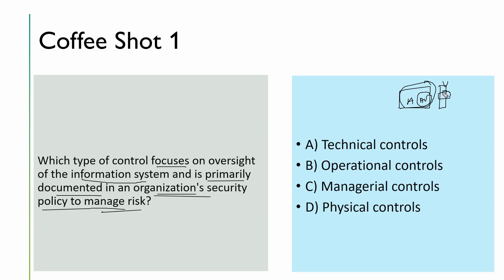Firewall inspects the packet and blocks it — it is not a human doing this, so technical control is something technical in nature which tries to block technically. Operational control ensures the day-to-day operations of an organization comply with the security policy. Managerial controls are set by management — they are primarily administrative in nature. Example: change management, risk management. Physical control is something implemented physically — like hiring a security guard, installing locks to prevent unauthorized persons from accessing the facility.